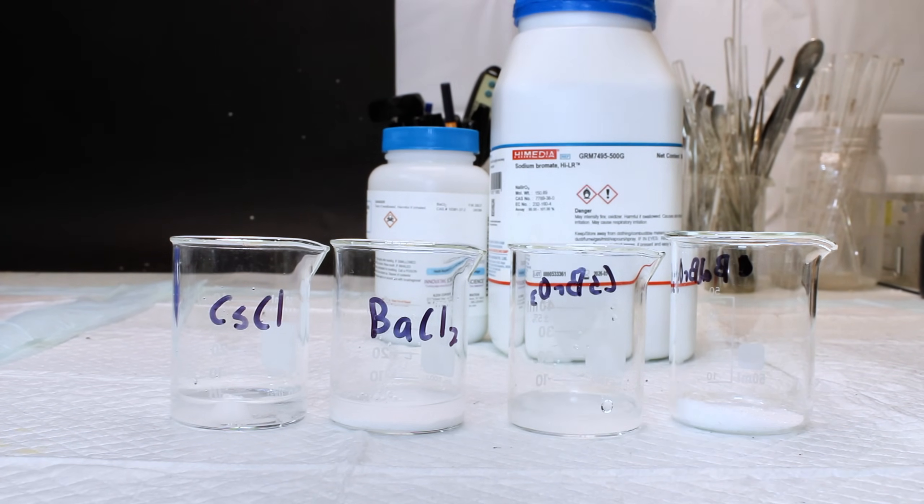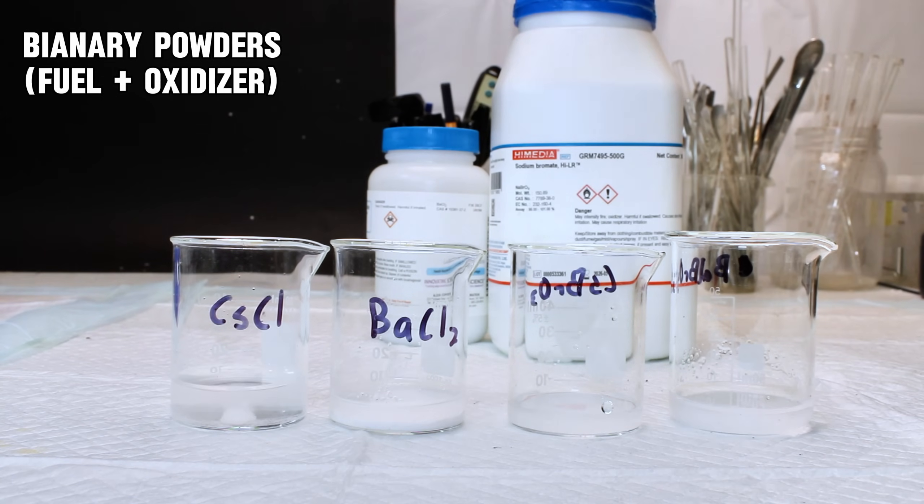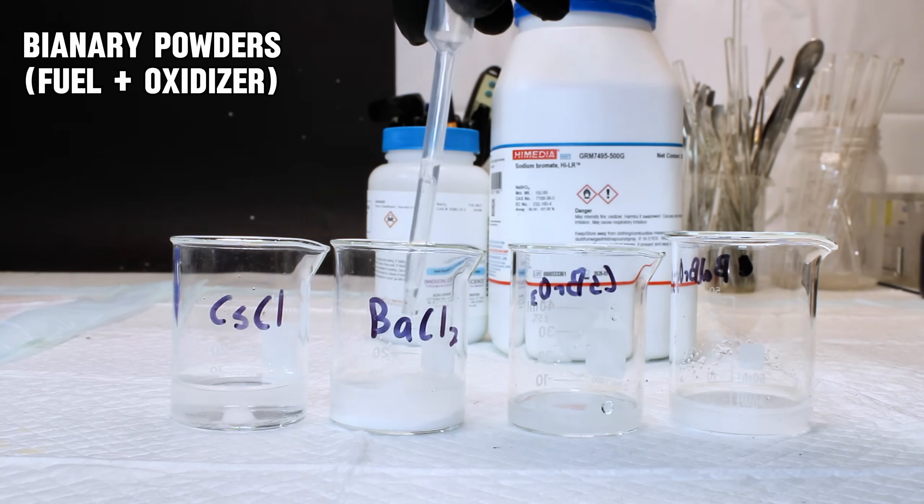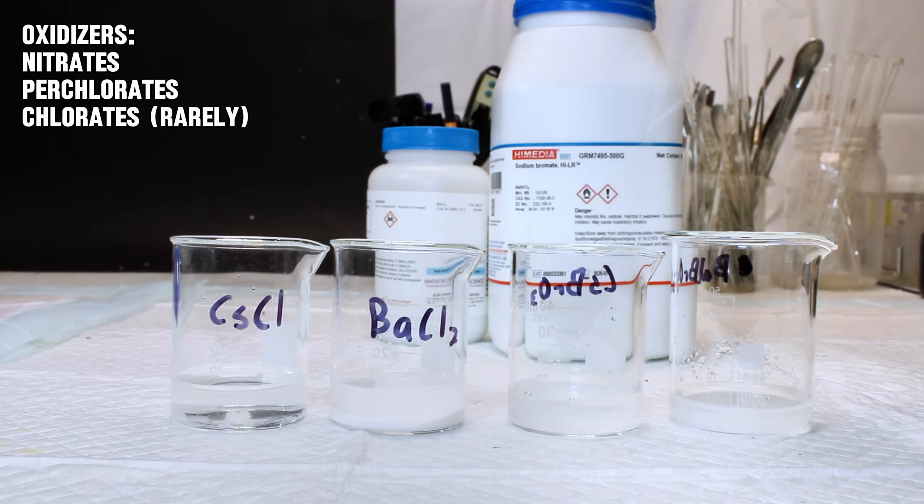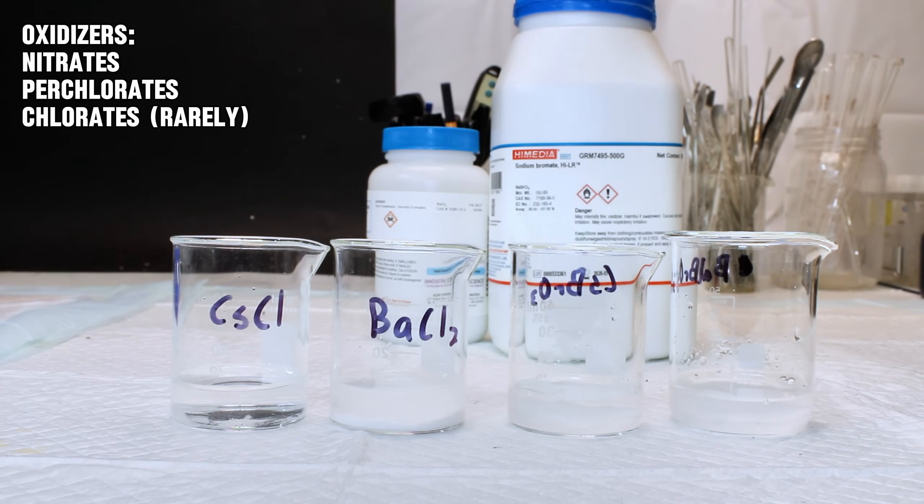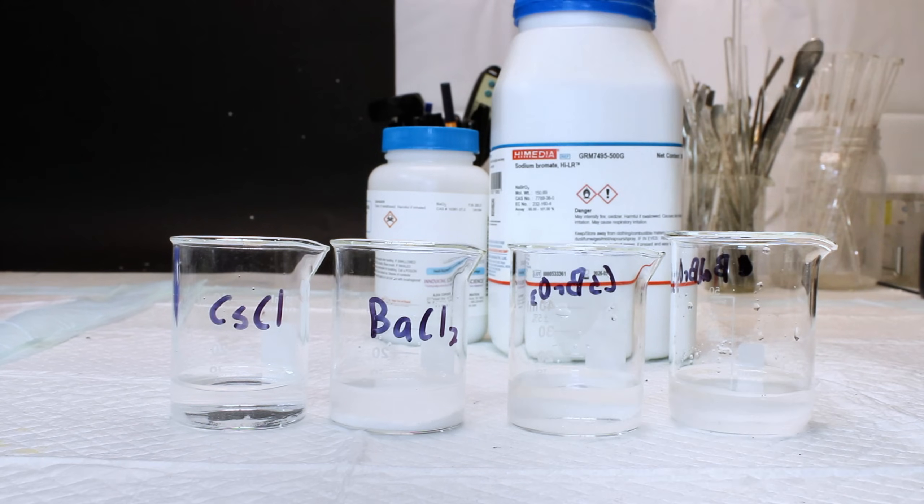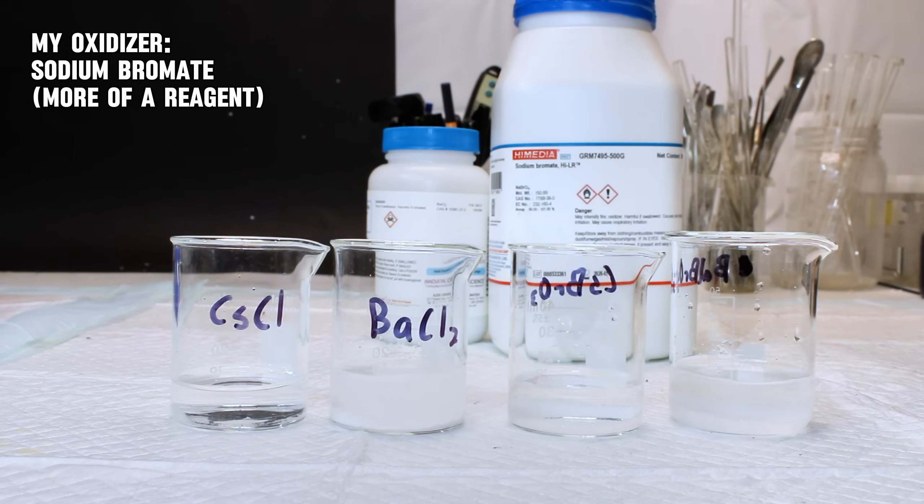On that note, the simplest pyrotechnics are called binary powders. These typically come in kits containing a fuel and an oxidizer that are stored separately and mixed just before use. Oxidizers are most typically nitrates or perchlorates, and their role is not only to provide oxygen to the reaction, but also color. The oxidizer I decided to use for this demo is called sodium bromate, which I'm going to use to make a variety of different colored flames, starting with green and blue.